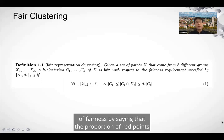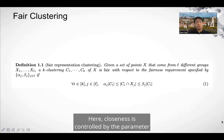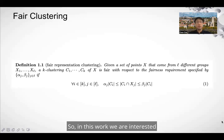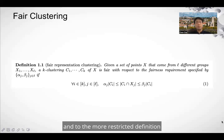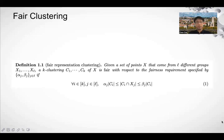We may also relax the previous definition of fairness by saying that the proportion of red points in each cluster is close to the proportion of red points in the population. Here, closeness is controlled by the parameters alpha_j and beta_j. In this work, we are interested in designing approximation algorithms for these fair clustering problems, both for the general relaxed definition of fairness and for the more restricted definition of exact fairness.